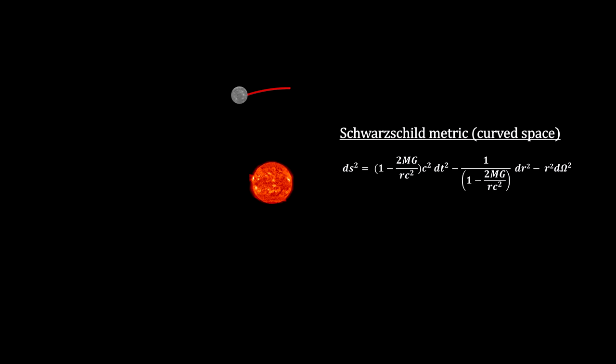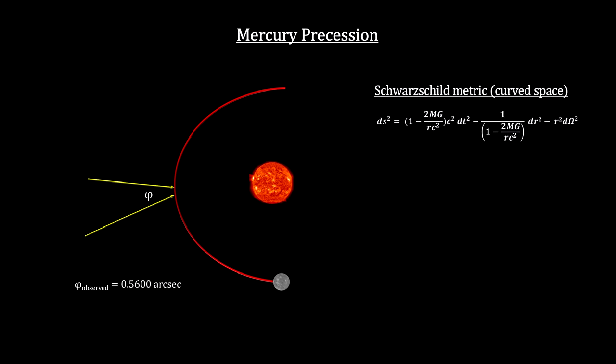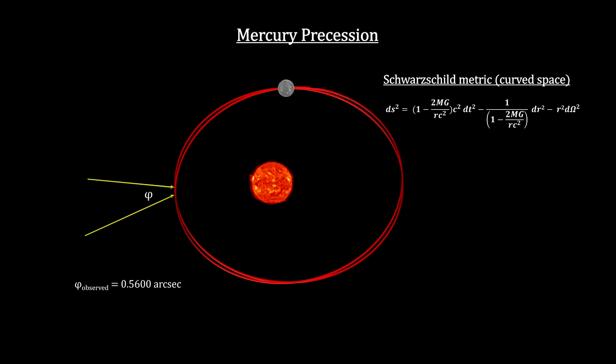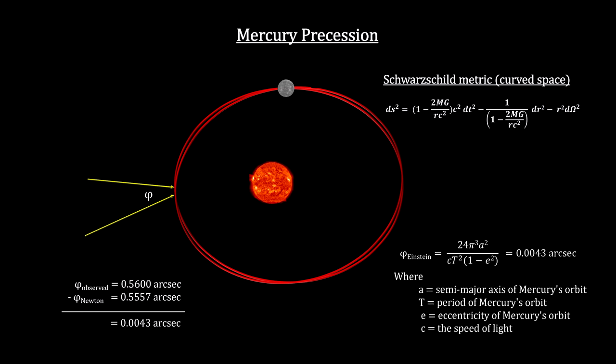As seen from Earth, the precession of Mercury's orbit is measured to be 0.56 arc seconds per orbit. An arc second is 1/3600th of a degree. Taking into account all the perturbation effects from all the other planets, as well as a very slight deformation of the Sun due to its rotation, and the fact that the Earth is not an inertial frame of reference, Newton's equations predict a precession of 0.5557 arc seconds. That's 0.0043 arc seconds short. With Schwarzschild's metric, Einstein came out with 0.0043 due to the curvature of space near the Sun. This was the exact number to cover the difference. He had passed the first test of his new theory.